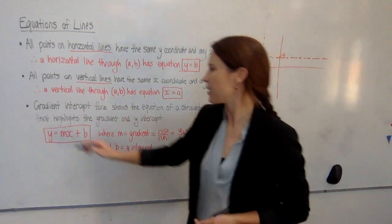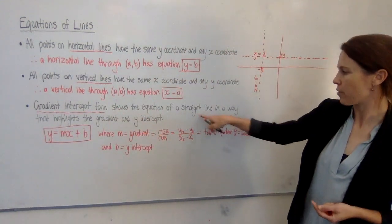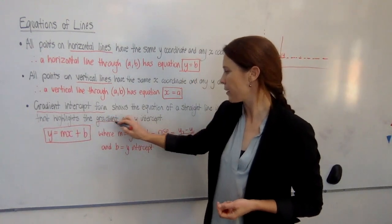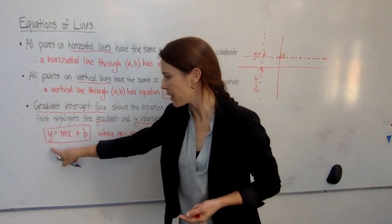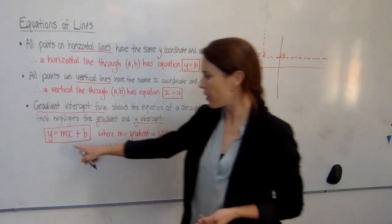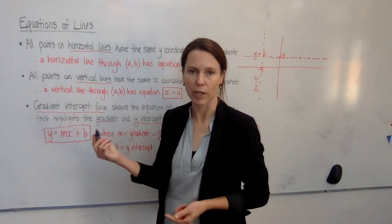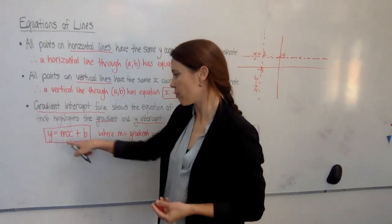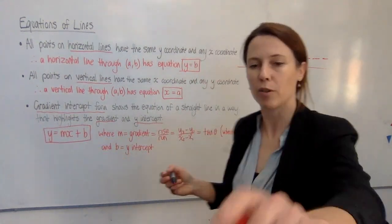Now, you're already familiar with gradient intercept form. It's really just a way of writing the equation of a straight line, so that you're highlighting the gradient and the y-intercept. And the beauty of this is that when you have a line in this form, y equals mx plus b, if you know the gradient and the intercept, you can go ahead and throw them into this formula and write the equation of the line really simply. Or, if you've got the equation for a line, you can pretty much just read off what the gradient and the y-intercept are, and that will help you graph it.